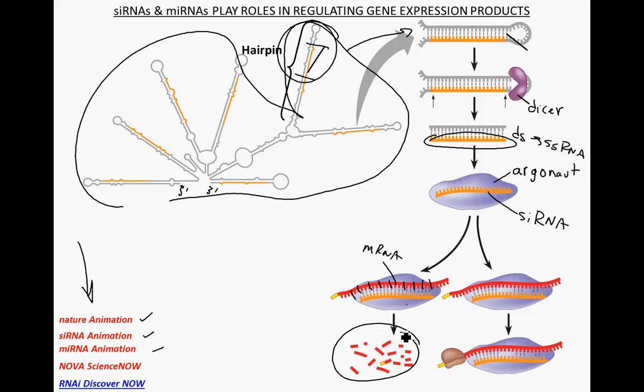Another function involves microRNAs (miRNAs). An miRNA molecule binds at only a few points on the mRNA, but then remains bound with an Argonaute protein to block the ribosome from translating any of that mRNA, essentially shutting off gene expression. These siRNA and miRNA mechanisms are all relatively new discoveries — watch the linked animations for more detail on these post-transcriptional regulatory mechanisms.